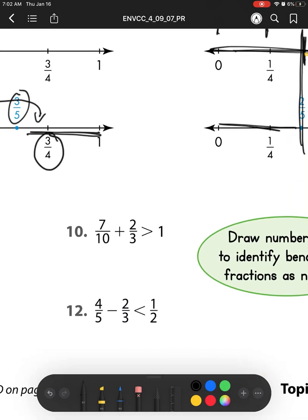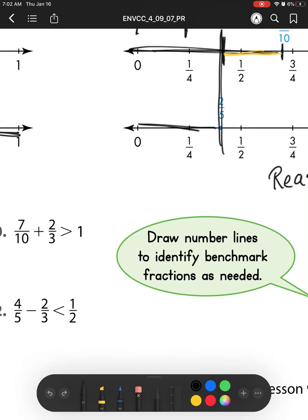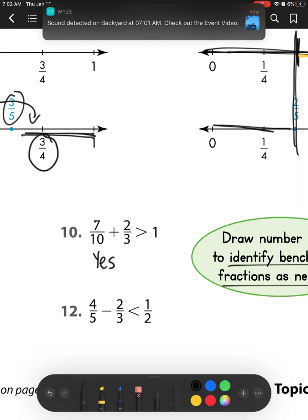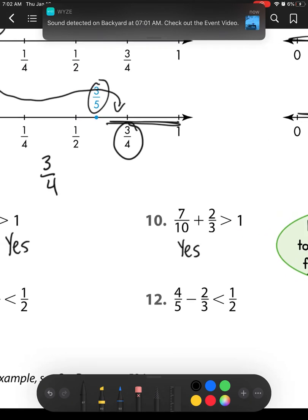Let's check over number 10. This says draw number lines also to identify benchmark fractions as needed. Here, 7 tenths—well, that's bigger than 1 half. And 2 thirds is bigger than 1 half. So I have something bigger than 1 half plus something bigger than 1 half. So that is yes, it is reasonable. 1 half plus 1 half equals 1 whole. So something bigger than 1 half plus something bigger than 1 half should be bigger than 1 whole.